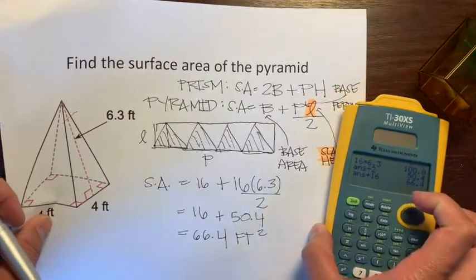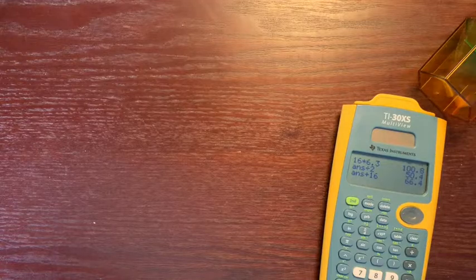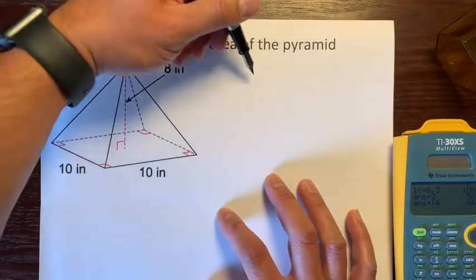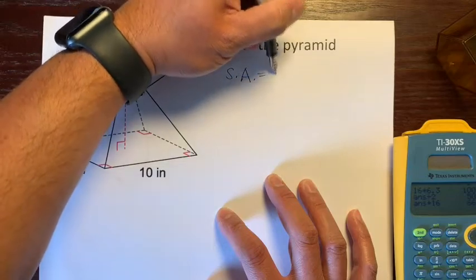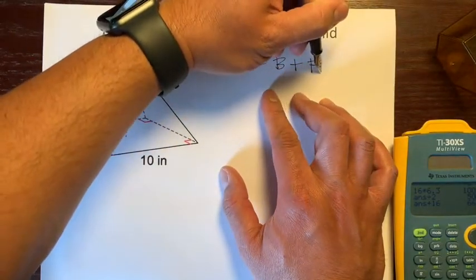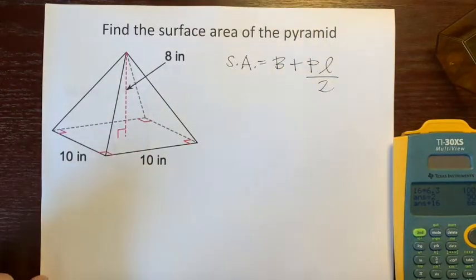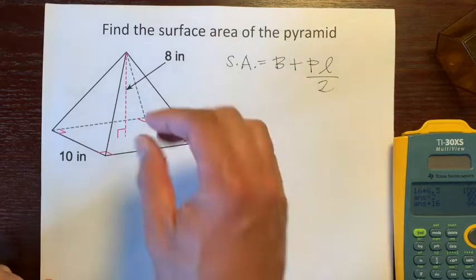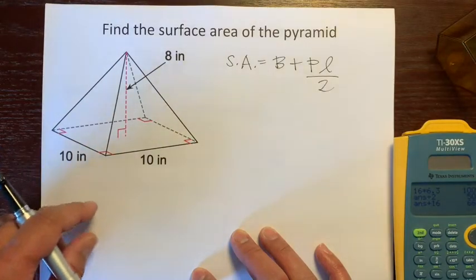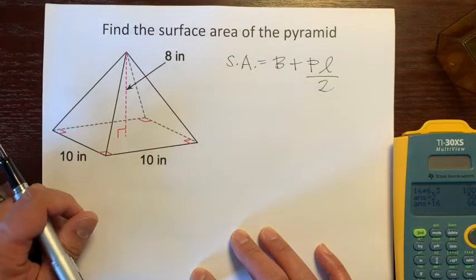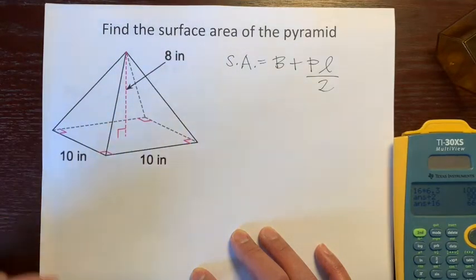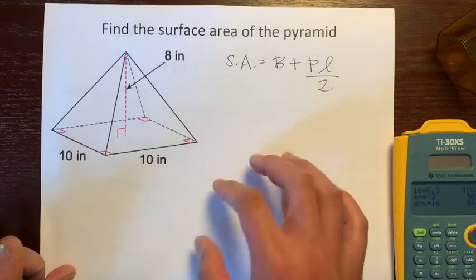Let me show you one more example. Surface area of a pyramid — let's write the formula again. Surface area equals base area plus base perimeter times slant height over 2. They give us a square base, so we can figure out the base area and the base perimeter. But it doesn't look like we have the slant height — it looks like they give us the height height, the height from the center all the way to the highest point of the pyramid. But we can figure out what the slant height is.